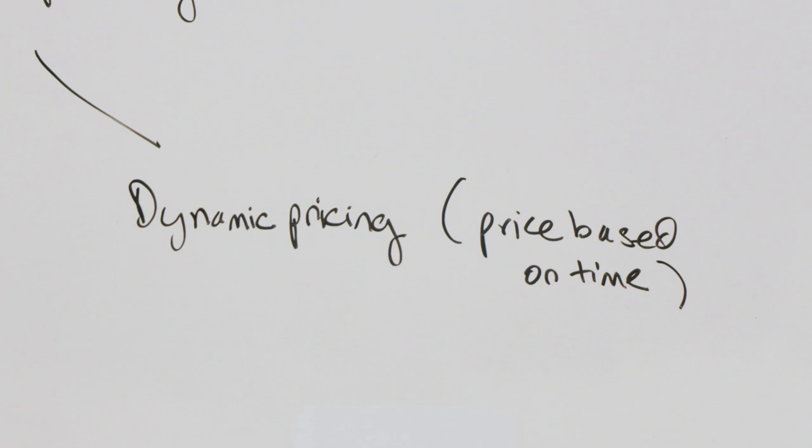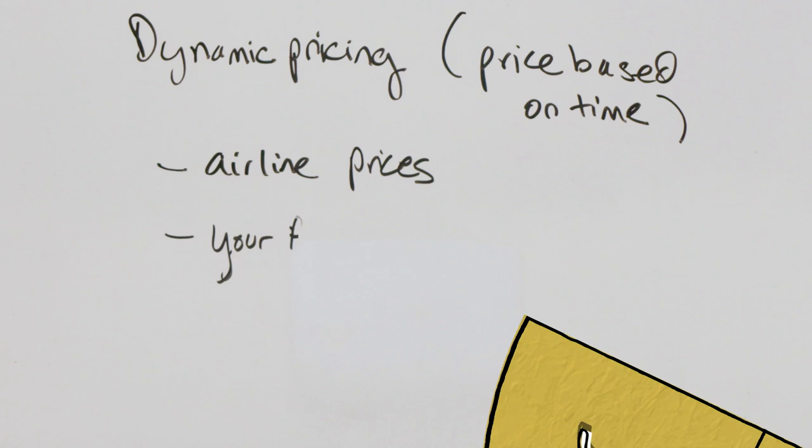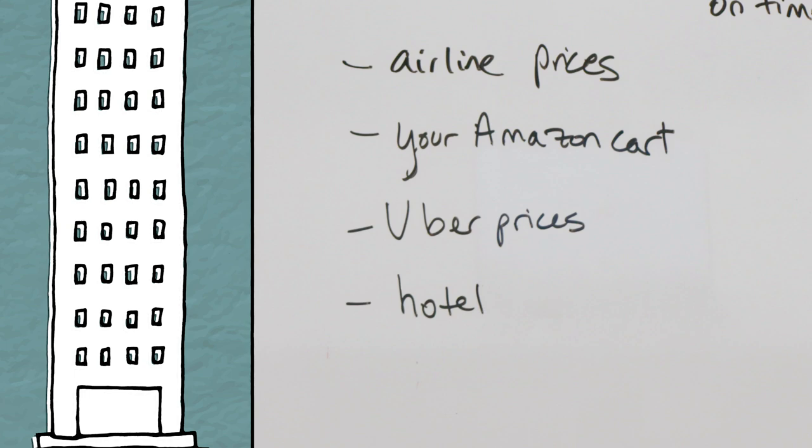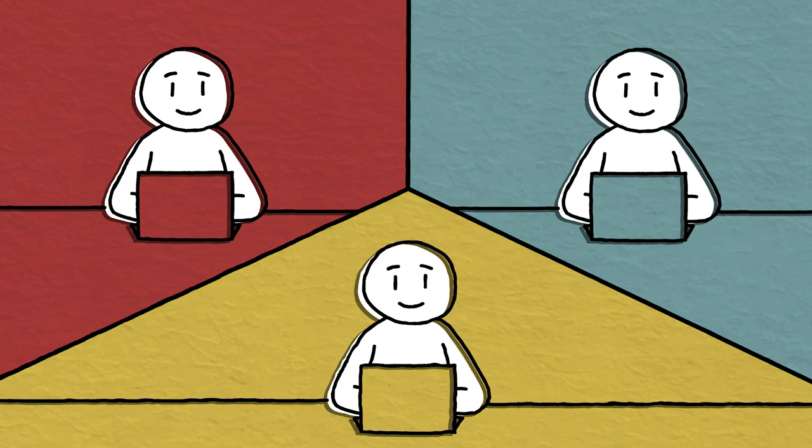Dynamic pricing are prices that fluctuate by time, usually. So you're gonna see it with airlines most often when you're shopping for a fare. Amazon, when you put items in your cart, they can change as often as every 15 minutes. Uber, same thing. They change their prices based on the routes and the time of day, and hotel rooms based on how much availability there is in that city. Dynamic pricing.